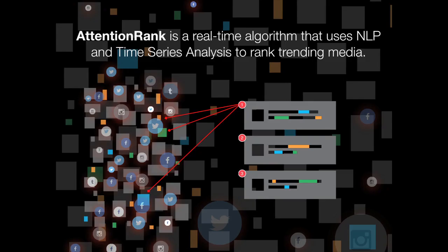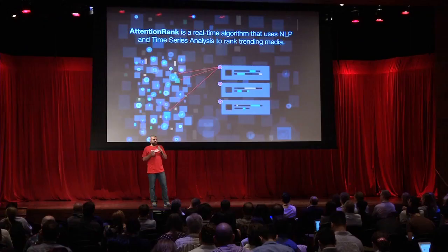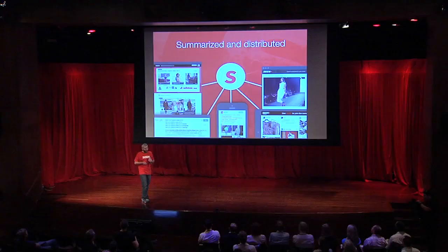Our idea is, every time somebody takes a photo, or every time somebody takes a tweet, that could be like a page rank for something that happens. We could rank that, and we could understand the story of what was happening. We index, we organize, we rank, we create summaries.